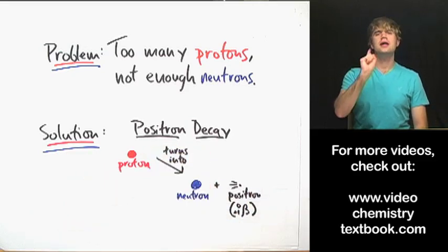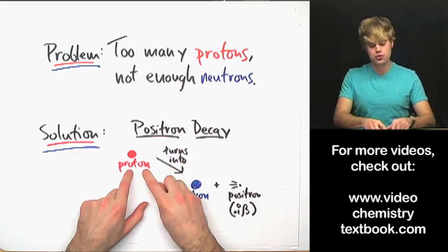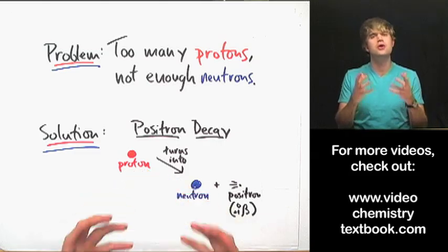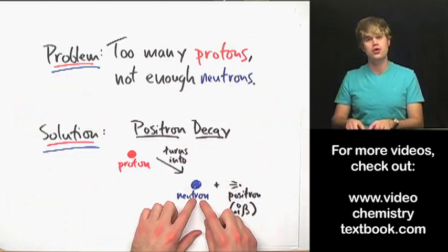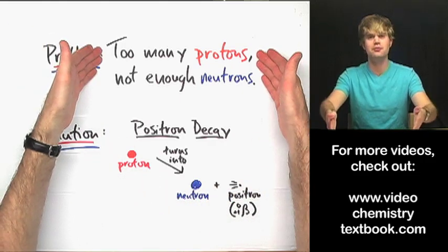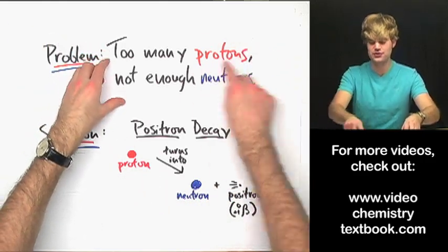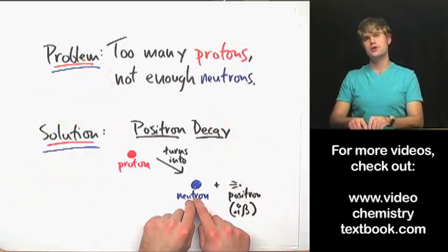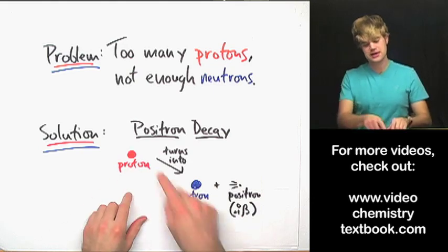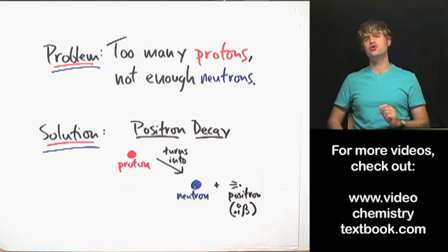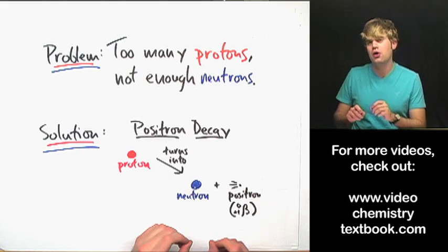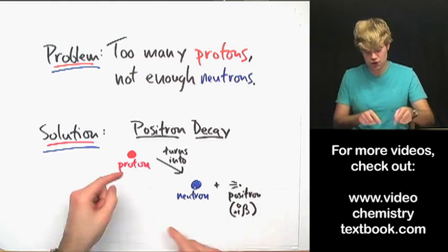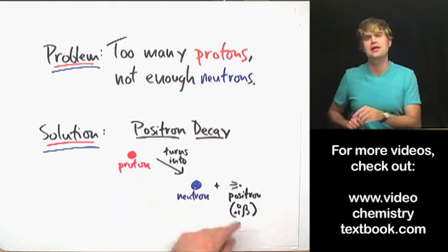In positron decay, here's what happens. One of the protons in the nucleus of this unhappy atom turns into a neutron. This solves the problem — now we have fewer protons and we have more neutrons. In the process of this proton turning into a neutron, something else happens: a particle called a positron gets created in the process.